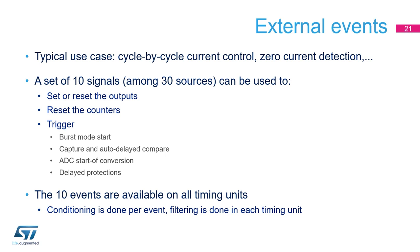External events play a key role in the HR timer. They dynamically modify waveforms, typically to implement cycle-by-cycle current control or to restart the counter following zero current detection. A set of ten external events, chosen from among 30 on-chip or off-chip sources, are used to set, reset, or toggle the outputs, reset the counters, and trigger features such as the burst mode controller, the capture and auto-delayed compare, the ADC start of conversion, or protections. The ten external events are available for all timing units; while conditioning such as edge sensitivity is done globally, a different event filtering scheme can be applied to each timer.